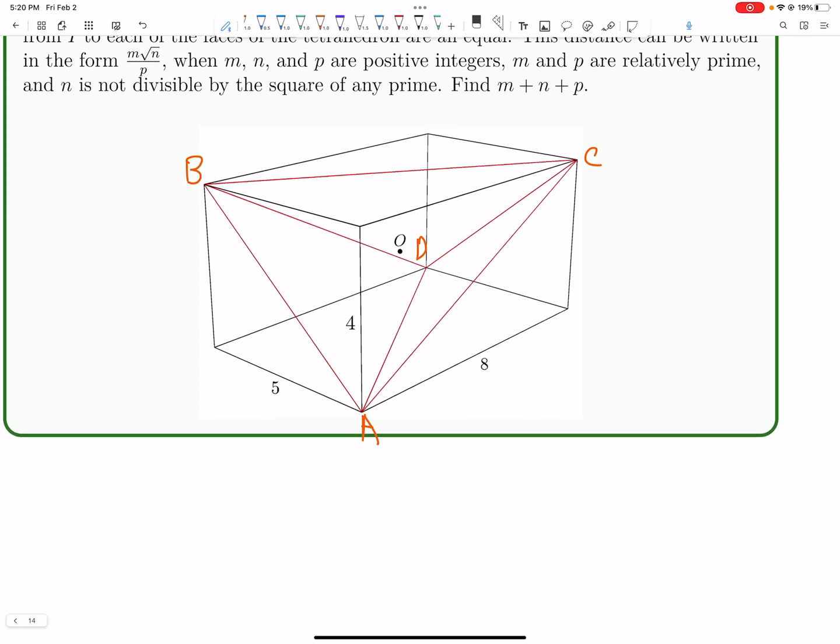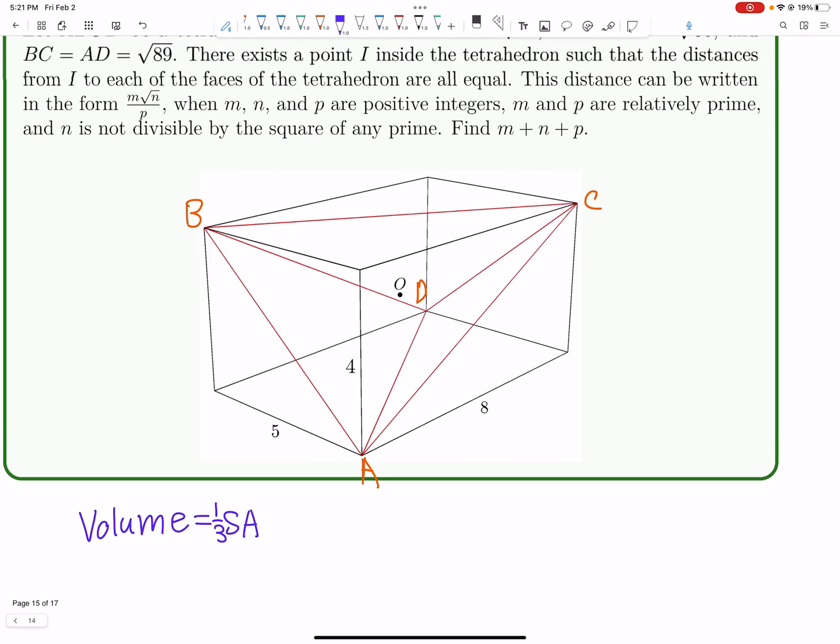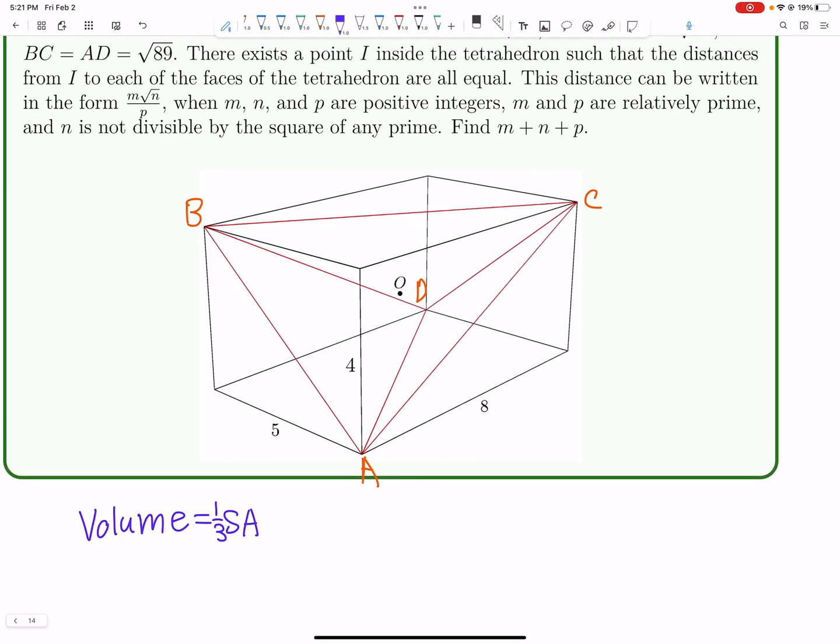So the idea here is volume in two ways, essentially. So if we can find the volume, just by regular methods, we can also say that volume equals surface area, one-third times surface area times whatever that distance is. Let's call it R, it's like basically kind of like an in-radius. So one-third times surface area times R is the volume. So if we can solve for the surface area and we can solve for the volume, we can solve for this R.